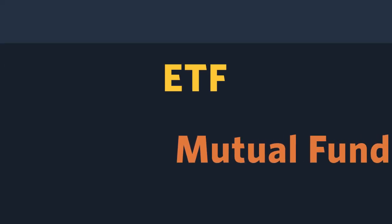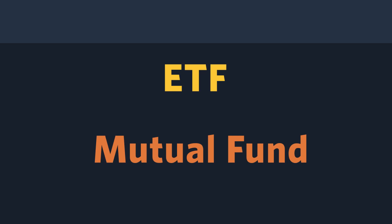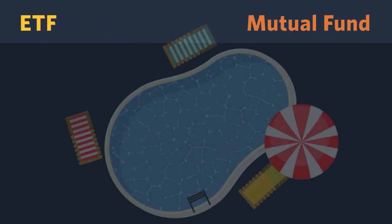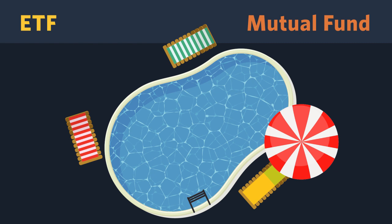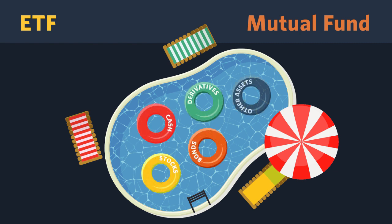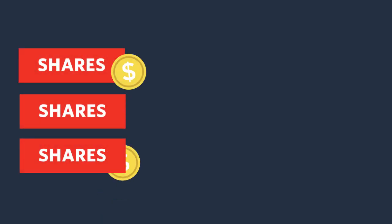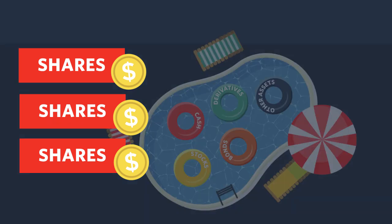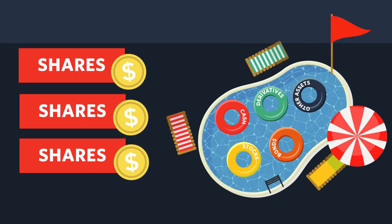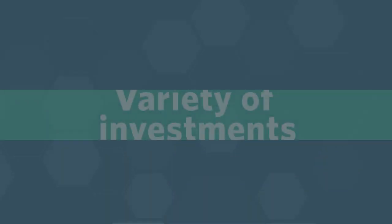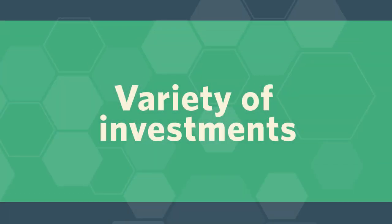Let's start with how an ETF is similar to a mutual fund. Both ETFs and mutual funds are made up of a pool of assets. The pool can have stocks, bonds, and other types of assets in it. When you buy shares of the ETF or mutual fund, you then have a claim on the pool of assets held by the fund.